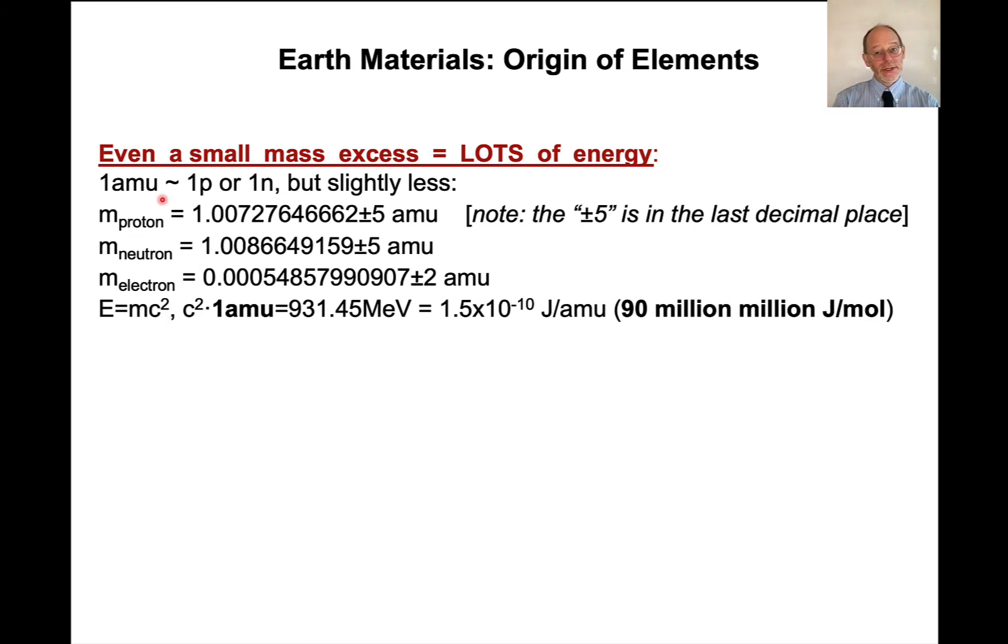Let me back up for a second. And amu, it's about the mass of a proton or a neutron, but it's a little bit less than that. The actual mass of a proton, the last time I looked this up when I was putting together this lecture, is 1.0072764662 plus or minus 5. This plus or minus 5 is in the last decimal place here. So 62 plus or minus 5 amu. A neutron is a little bit more massive, 1.0086649159. And the mass of an electron is 0.00054857990907.